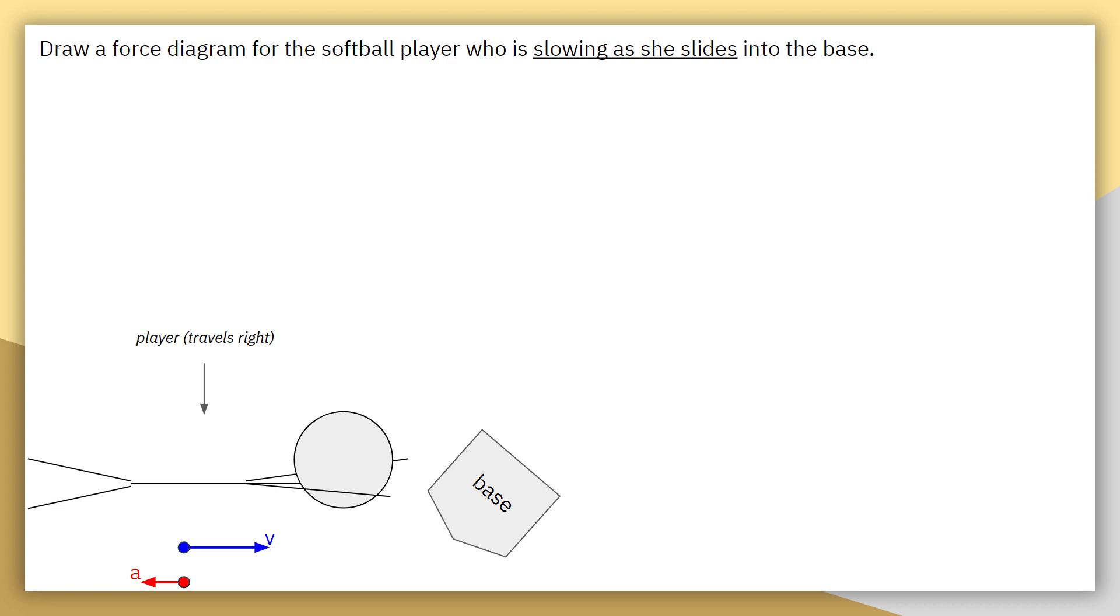However, she's traveling to the right but slowing down. That means that her velocity is changing, which means there's some acceleration in the opposite direction of motion, which is why I'm saying there's some leftward acceleration. Now this is going to be important because that means that our forces are going to be unbalanced and they need to be unbalanced pointing to the left to explain that acceleration.